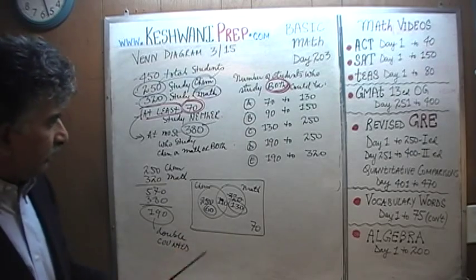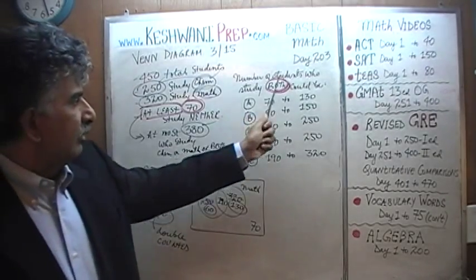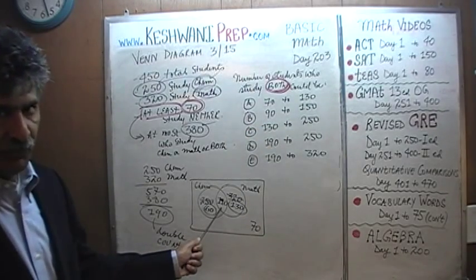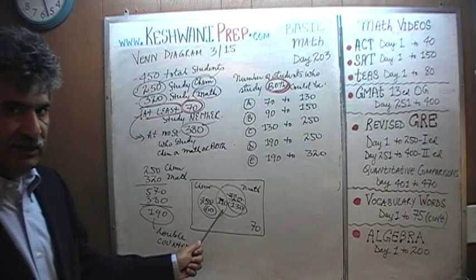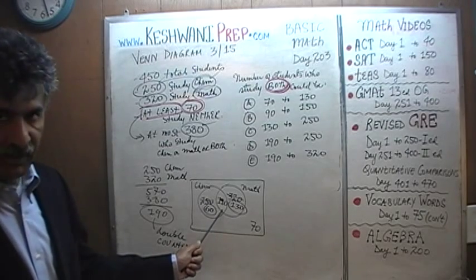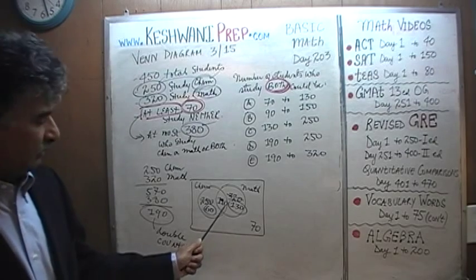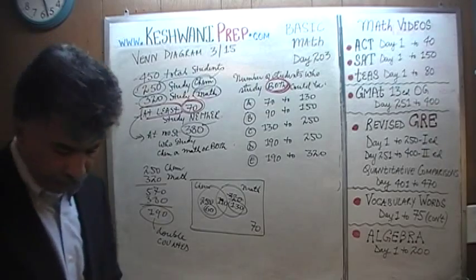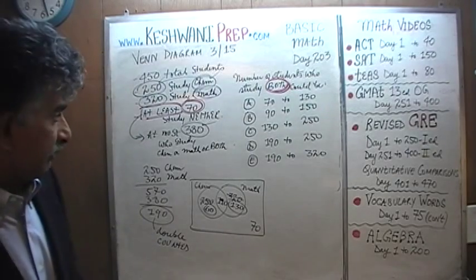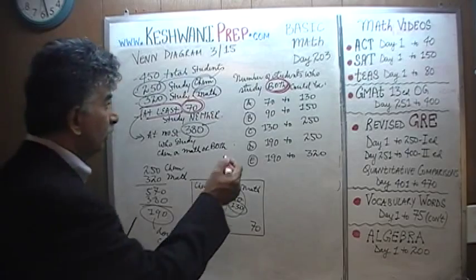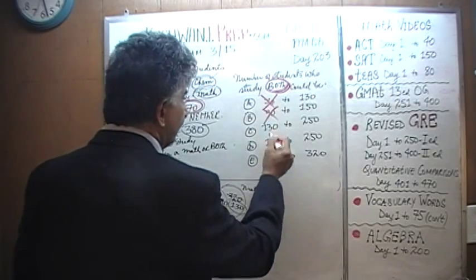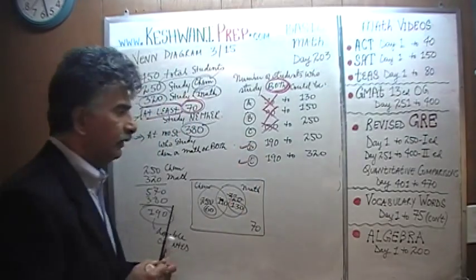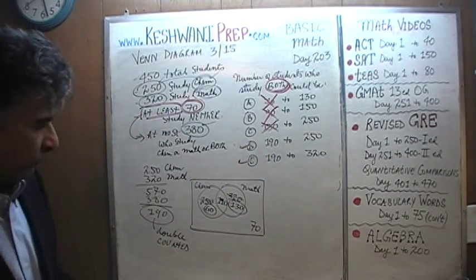We are not interested in that part — the question asks which range represents the number of students who study both. We know 190 is the starting point. This is the least number of people who could be studying both subjects. The range has to start at 190, which means the answer cannot be 70, 90, or 130. It has to be either D or E. Now we have to do the second half of the work.